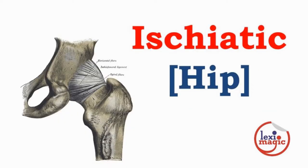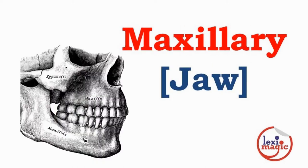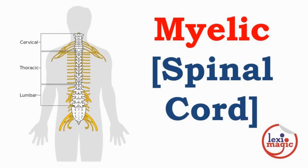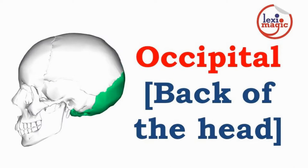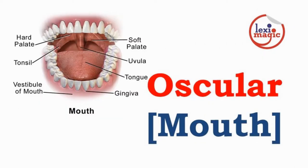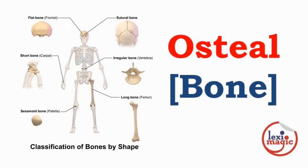Ischiatic refers to the hip. Maxillary refers to the jaw. Myelic refers to the spinal cord. Nephric refers to the kidneys. Occipital refers to the back of the head. Oscular refers to the mouth. Osteal refers to bone.